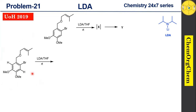This substrate has three acidic positions with acidic protons. However, one particular proton is more acidic, because LDA prefers to abstract the proton from the most acidic position. This proton is more acidic because it resides in between the carbon-bromine bond as well as the carbon-methoxy group, and these two groups inductively withdraw electrons from that particular carbon, making that proton more acidic.